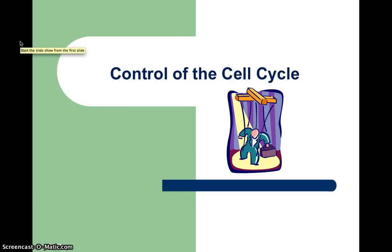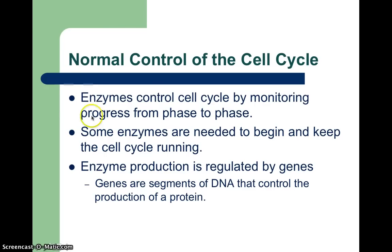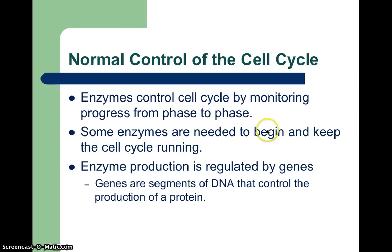Hello, this is Mr. Filipek and today's video is going to talk about the control of the cell cycle and what happens when the cell cycle isn't controlled, which eventually leads to cancer. Enzymes, or proteins, basically control the cell cycle by taking the cell from phase to phase. We have interphase and on to metaphase, anaphase, telophase, cytokinesis. Some of the enzymes that are made are needed to start or begin the cycle and other ones just kind of keep them going.